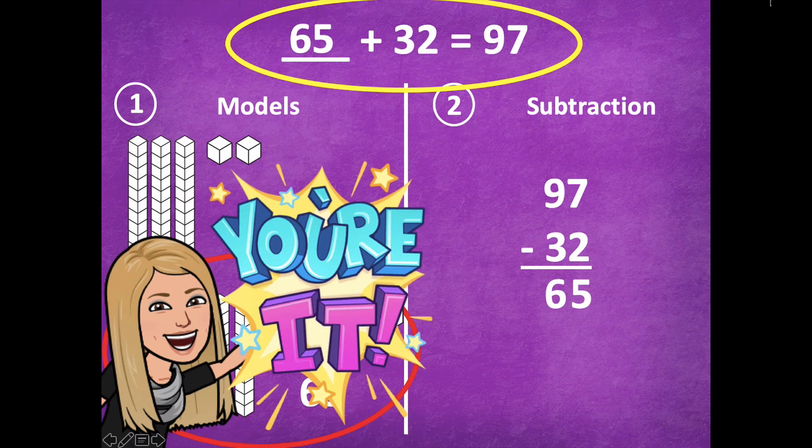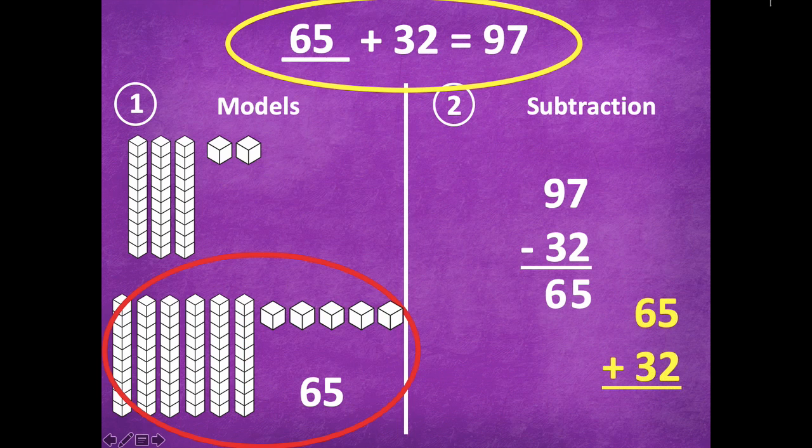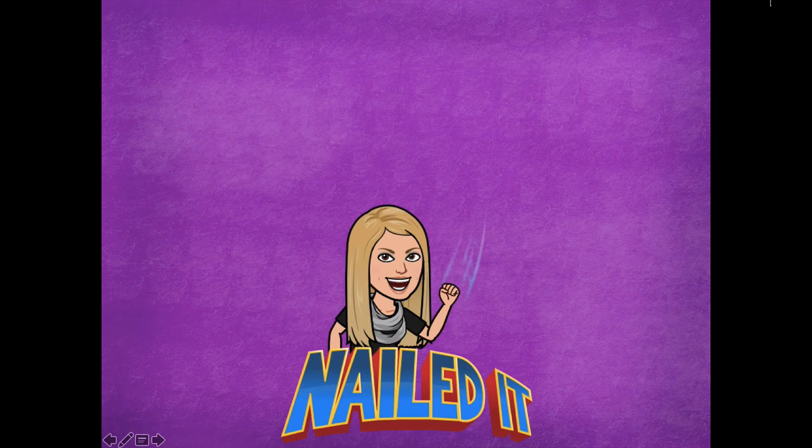All right friends, pause if you need more time. Otherwise here we go. So 65 plus 32, I'm going to add the ones place. 5 plus 2 is 7, and in the tens place, 6 plus 3 equals 9. So because those two addends equal 97, just like in my problem up in yellow at the top, then I correctly identified the missing addend. So way to go friends, you guys nailed it with finding the missing addend!